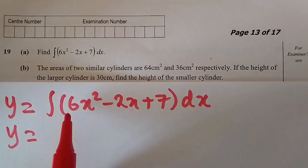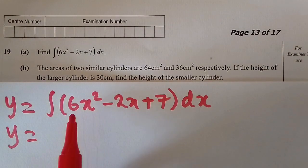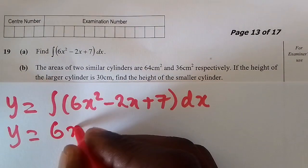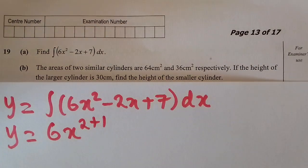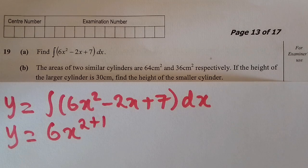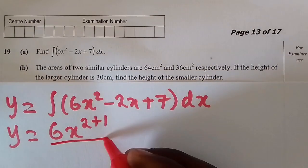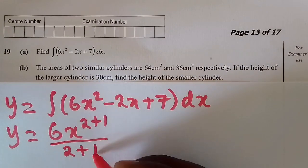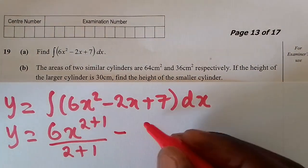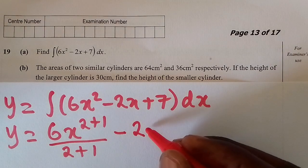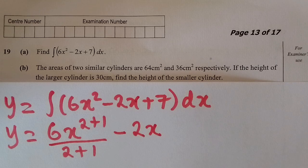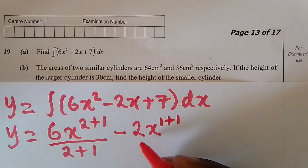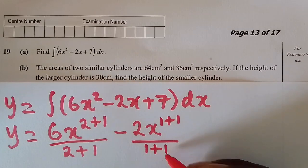We go straight into working out the process. For the first term it will be 6x to the power 2 plus 1, divided by 2 plus 1, because in integration we add and also divide by the new index. For the next term, it will be minus 2 times x — since x written alone has power 1 — so x to the power 1 plus 1, over the new index 1 plus 1.